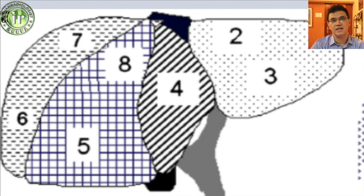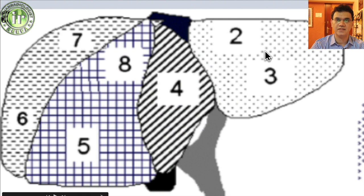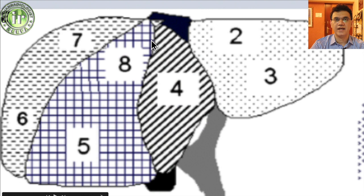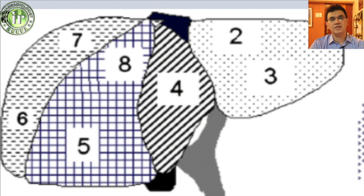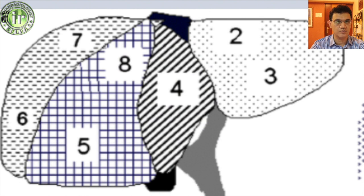Let us understand how the segments are labeled. Starting from the left lobe, we go 2, 4, 8, 7 — segments 2 and 4 are the left lobe of liver, and 8 and 7 are the right lobe of liver. These divisions are made by the hepatic veins: the right hepatic vein, the middle hepatic vein, and the left hepatic vein. Below this level, the portal vein as it courses through the liver becomes the benchmark for the segments below these four.